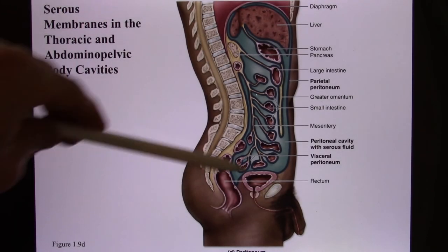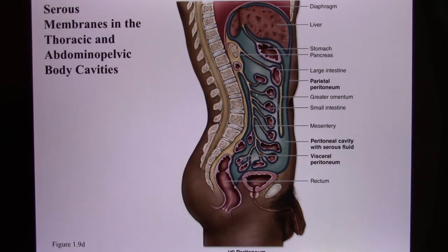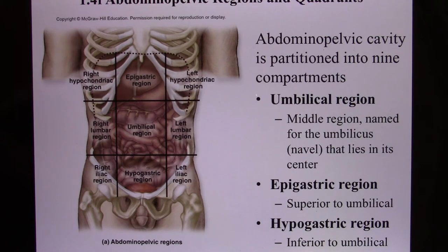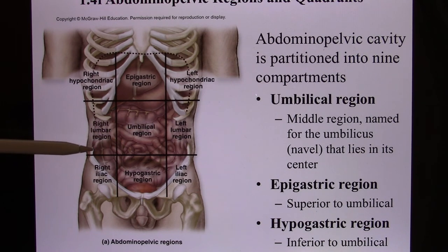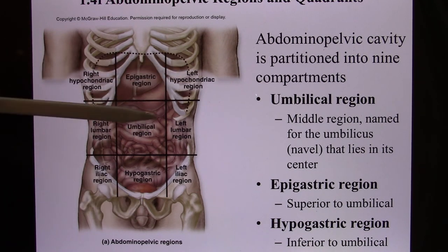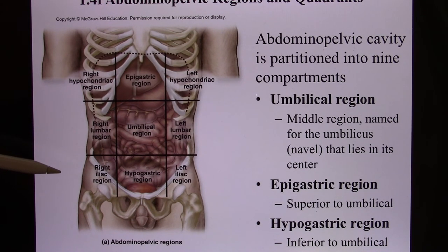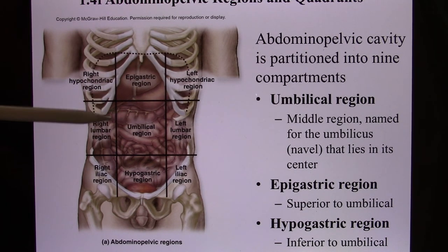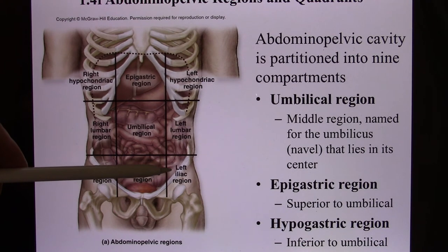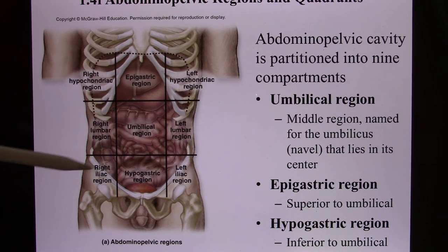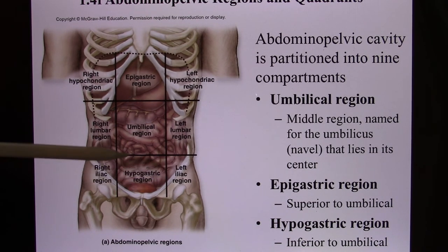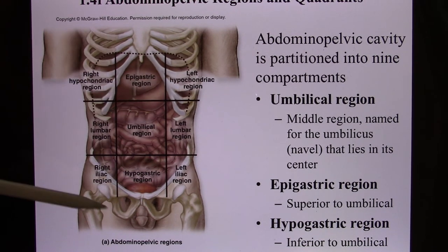This sagittal section shows all the organs there. Your abdominal pelvic cavity is large and contains many organs, so they divide it into nine different regions and four different quadrants. You need to know each region's name — in lab I can point to one and ask what region it is. For example, this is the right lumbar region; this would be the left iliac region. I can also give you an organ and ask what region it's in: the bladder is in the hypogastric region.